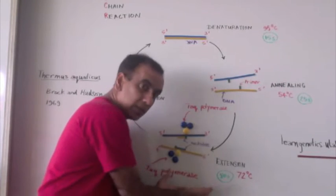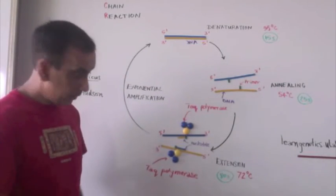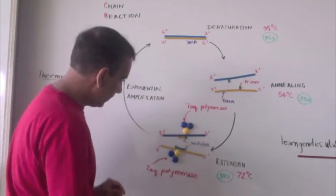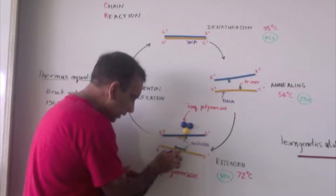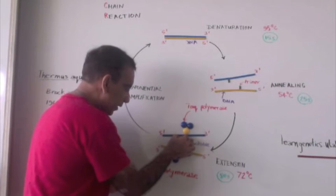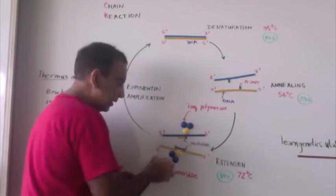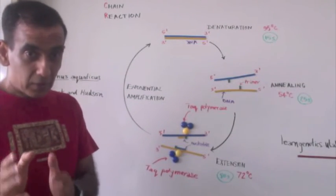And once the primers are in place and the temperature is raised to 72 degrees Celsius, the optimum for TAC polymerase, then it begins to go to work and to quickly assemble the part of the DNA molecule that you desire to have copied.